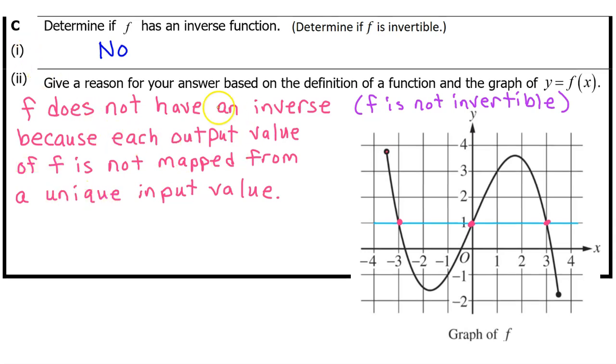But guess what? Even if you say all of this word for word, you still don't get the point unless you include an example. For example, f at 0 is equal to 1 and f at 3 is equal to 1. Now, you've earned the point.